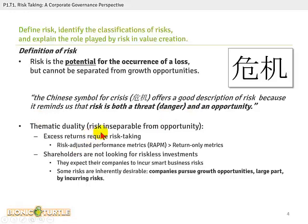This is thematic to the FRM and to a general approach to risk. At least two things follow from that. First, we tend to assume — as is traditional in finance — that excess returns require assuming some risk. If we want the risk-free rate of return, we can invest in a risk-free asset. But if we want to do better than risk-free, we need to assume some risk. This is the underlying philosophy behind risk-adjusted performance measures, or RAPMs, that we look at later.